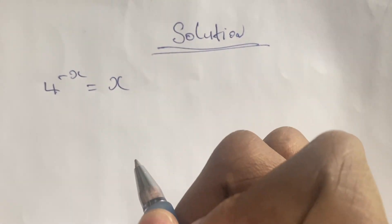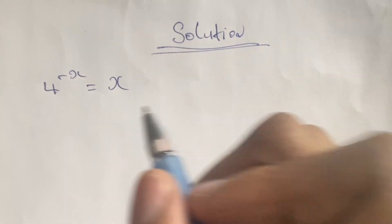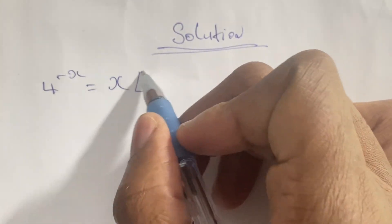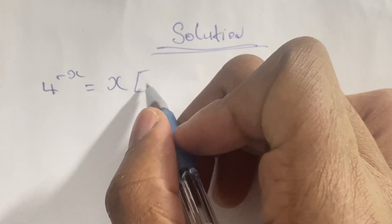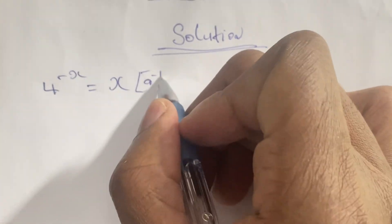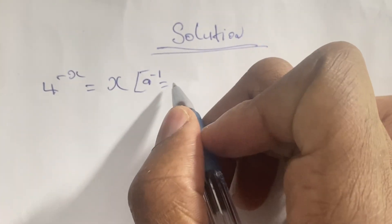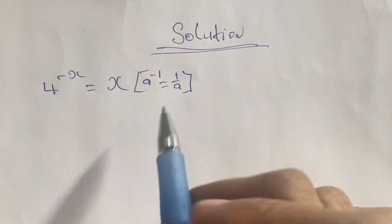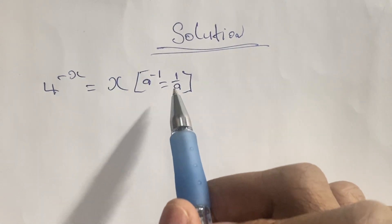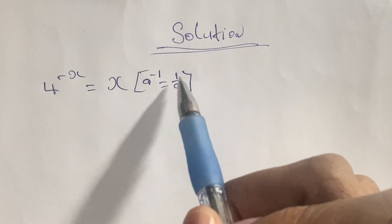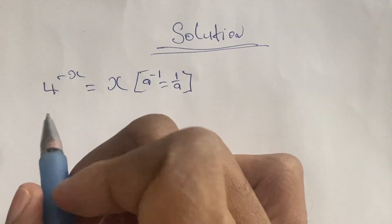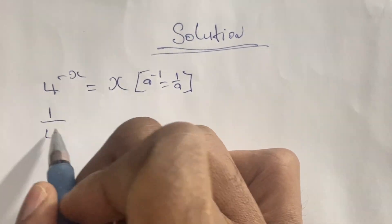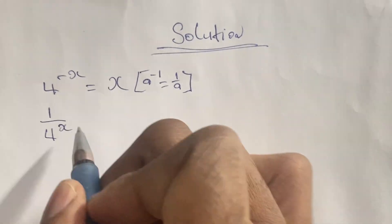We start by bringing the x on one side of this equation, and we do that by looking at our law of indices, where 4 to the power of negative x is the same as saying a to the power of negative 1 is equal to 1 over a. So we rewrite 4 to the power of negative x, giving us 1 over 4 to the power of x, and this is equal to x.